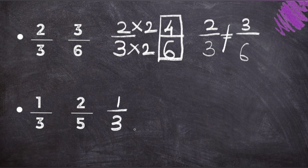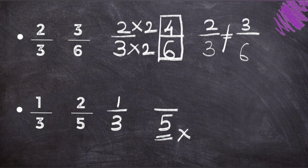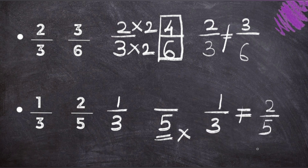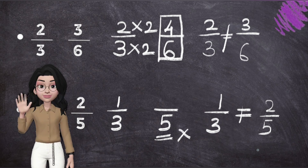The last example is 1 upon 3 and the denominator of the other fraction is 5. Look at the relation — can you multiply or divide 3 by anything to get 5? No. When the denominators don't relate, you don't need to go further — the fractions cannot be equivalent. So 1 upon 3 is not equivalent to 2 upon 5. That was all for today's class. Thank you, take care, bye bye.